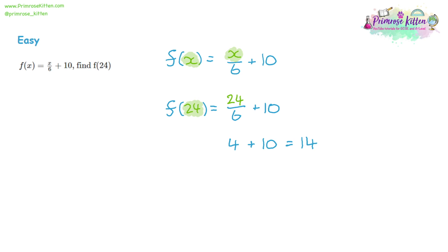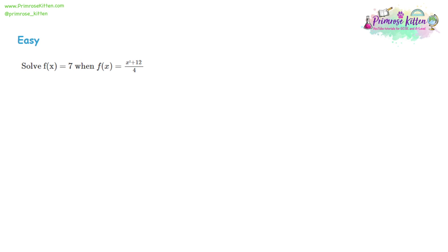It's substitution, and it's nice and easy. The next question is a little bit more complicated, but follows the same method. We have the function of x is equal to x squared plus 12, all divided by 4. And we are being asked to find the function of x when it's equal to 7.